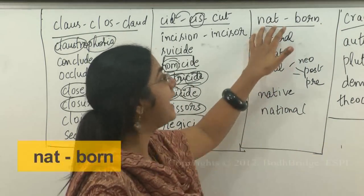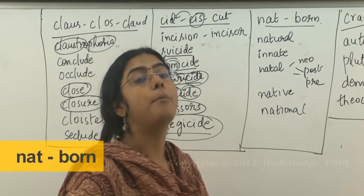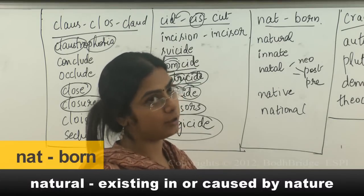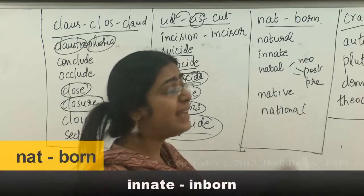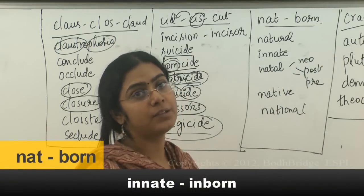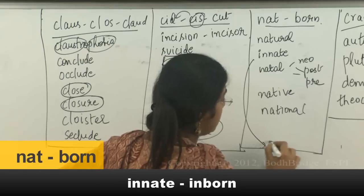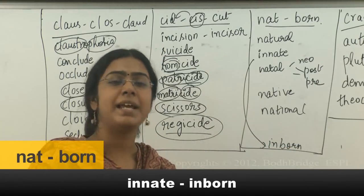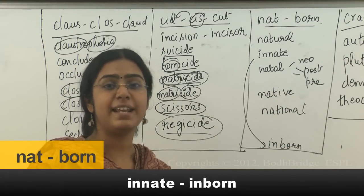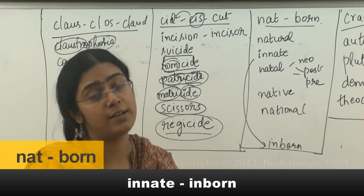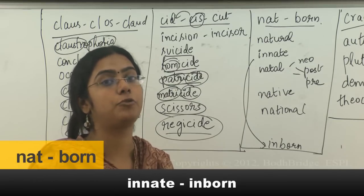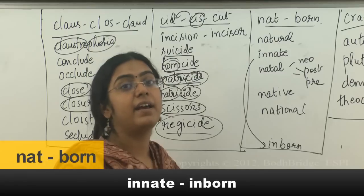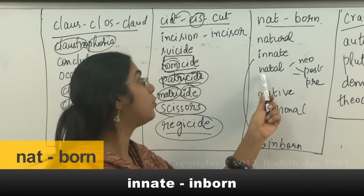The root word NAT means born. Natural means in the state in which it is born. Innate means inborn — for example, 'He's an innate charmer,' meaning it's an inborn quality in him to charm his way through people. So innate means an inborn talent or quality.